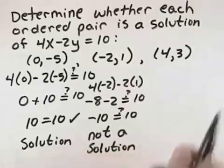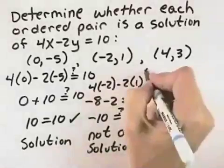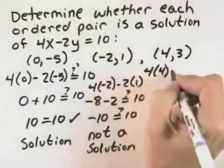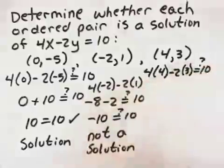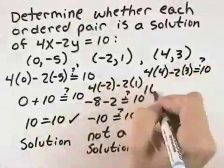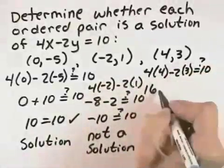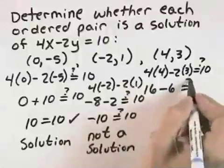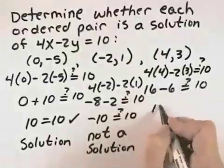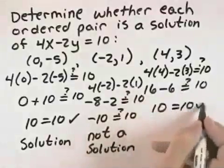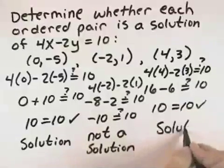Finally, if we try it again with the ordered pair 4, 3. We've got 4 times 4 minus 2 times 3. Does that equal 10? 4 times 4 is 16. Negative 2 times 3 is minus 6. Does that equal 10? 16 minus 6 is 10. That equals 10. So that one is a solution.